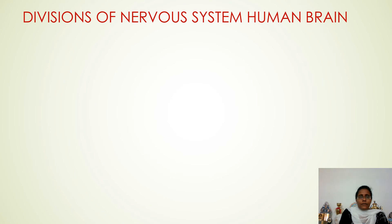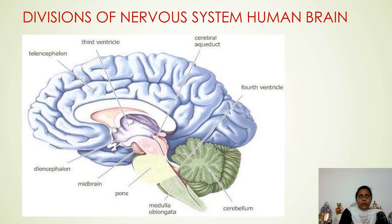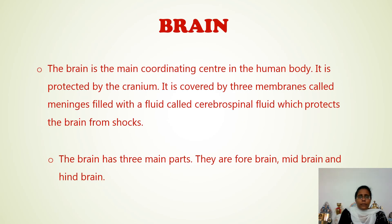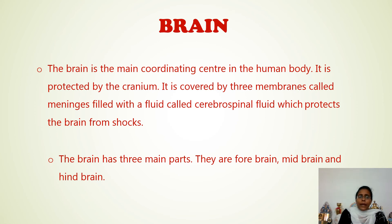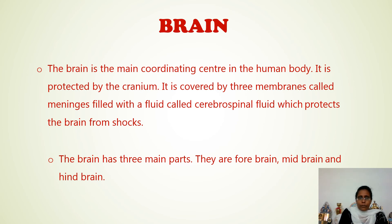Next, divisions of the nervous system — the human brain. The brain is the main coordinating center in the human body. It is protected by the cranium and covered by three membranes called meninges, filled with a fluid called cerebrospinal fluid which protects the brain from shocks. The brain is divided into three main parts: forebrain, midbrain, and hindbrain.